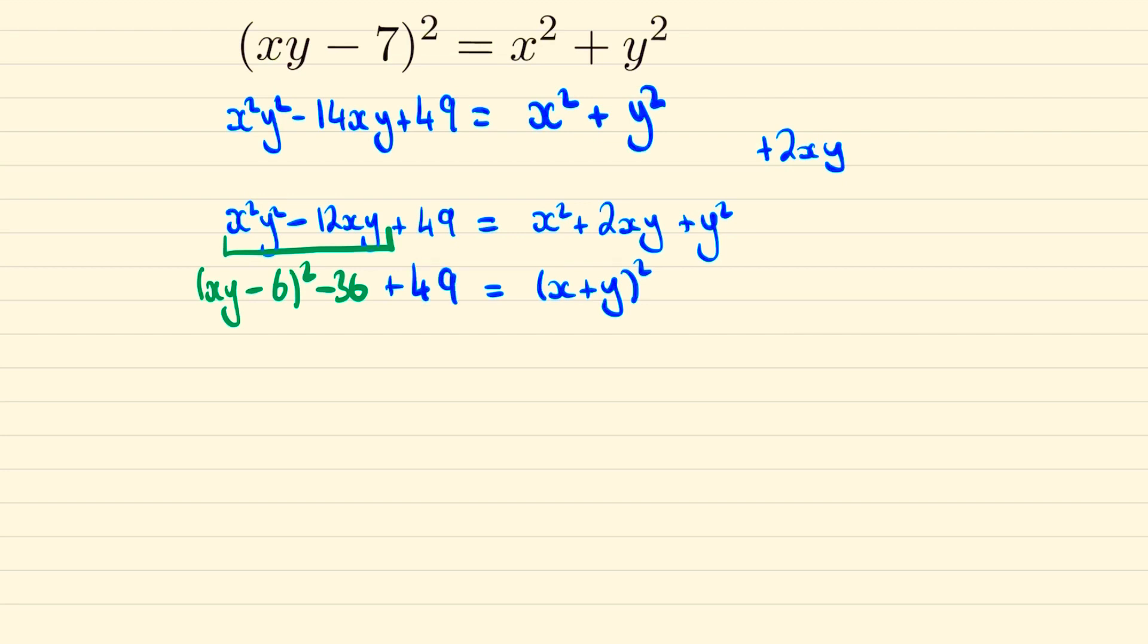And 49 minus 36 makes 13 so thus we can write 13 as the difference of 2 squares. Recalling that the difference of 2 squares a squared minus b squared factorizes as a plus b multiplied by a minus b.